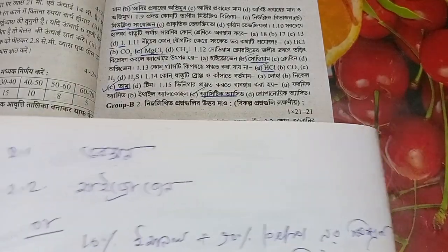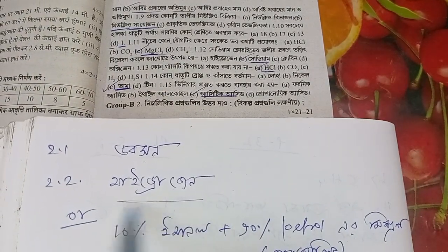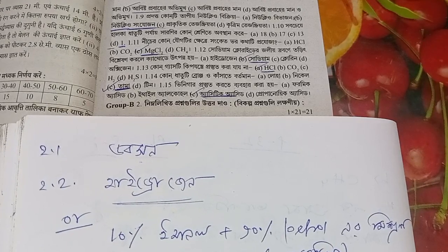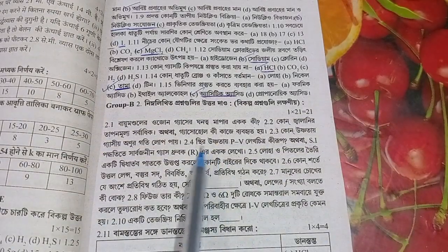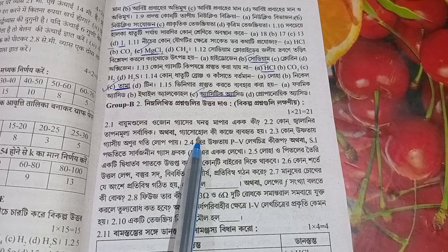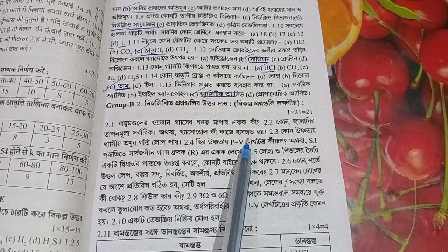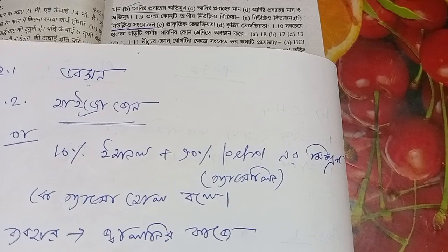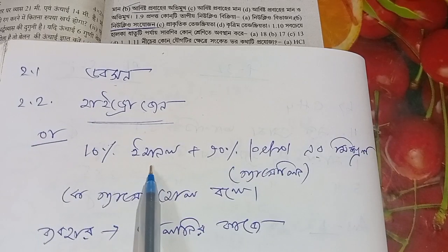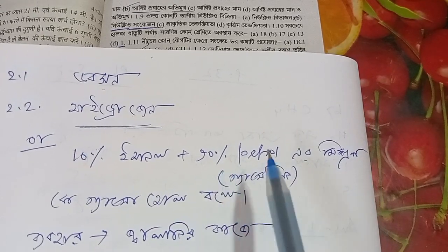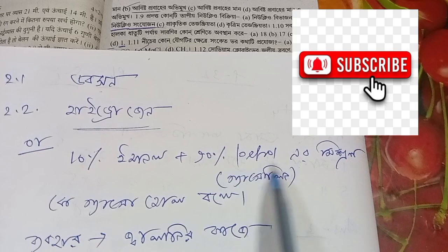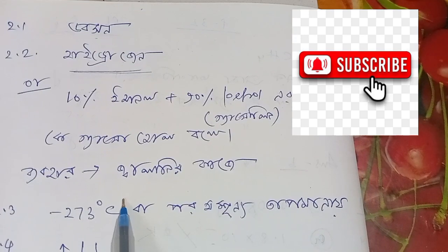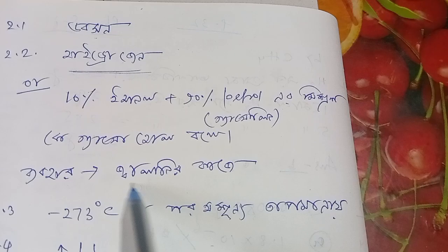This is Hydrogen. Next is Gas Hold. This is Gas Hold. 1.3% Ethanol. 9.5% Petrol. This is Gas Hold.